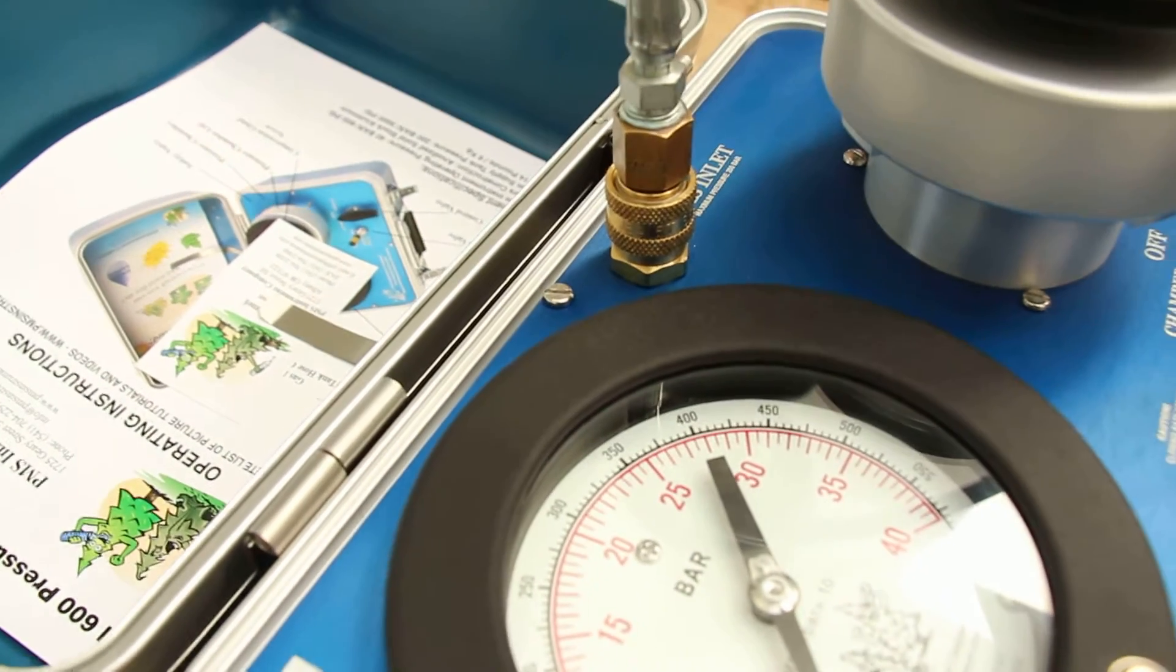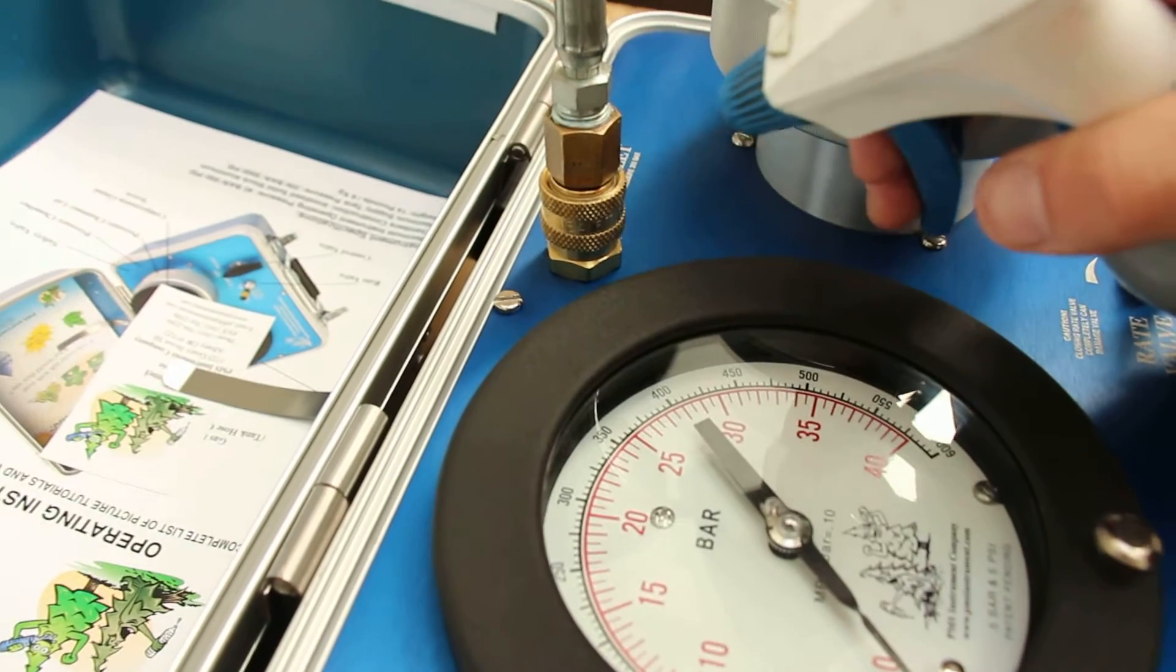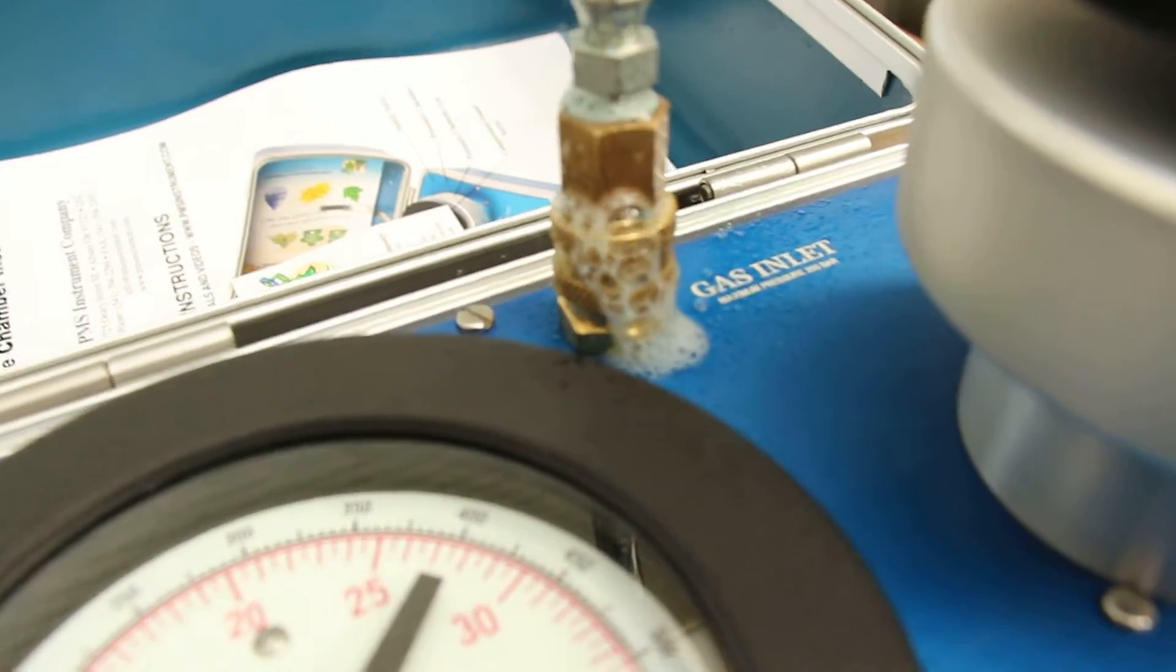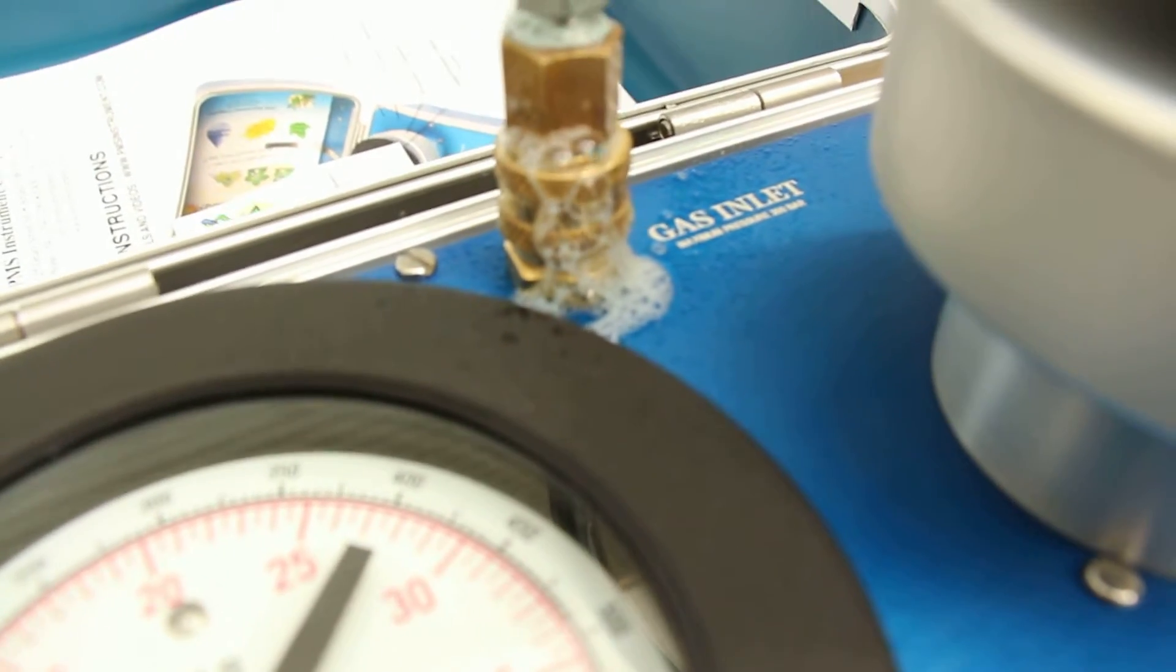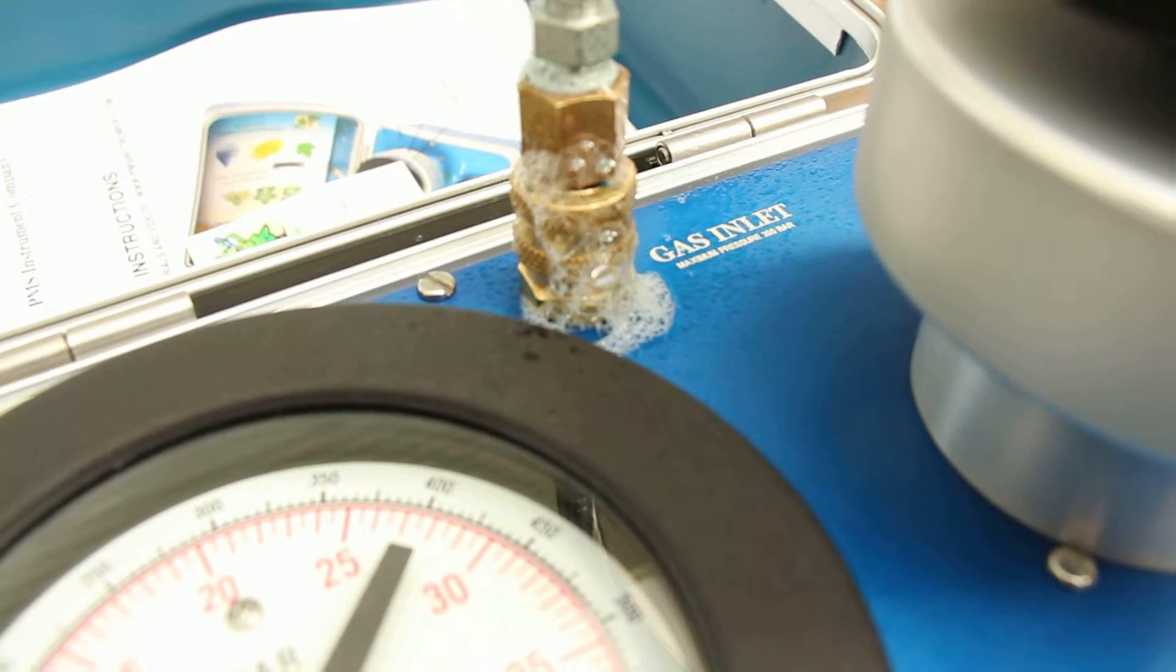But to ensure that we know for sure that it's a leak, the best thing you can do is use some sort of leak detector. Spray just a little bit of bubble check in there, and you can see we've got some pretty good bubbling going on right there. So there's definitely a leak there.